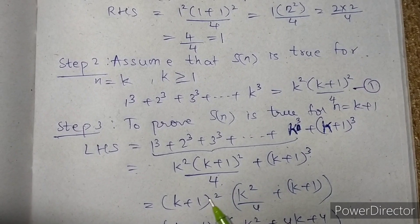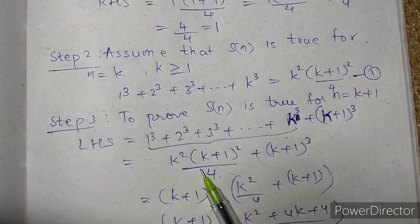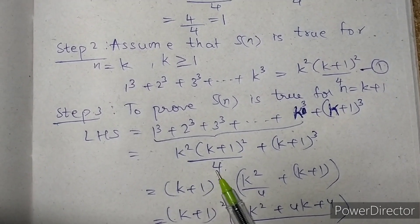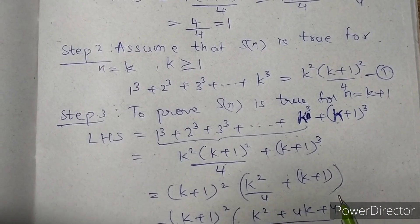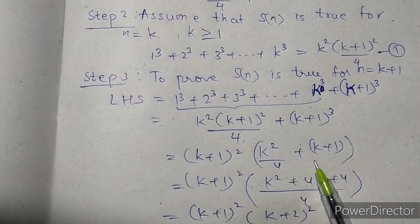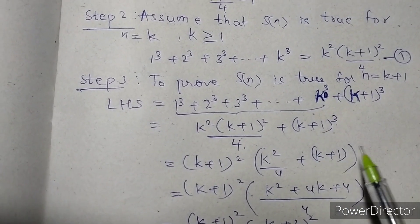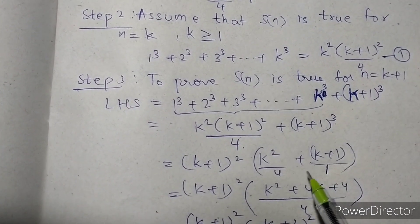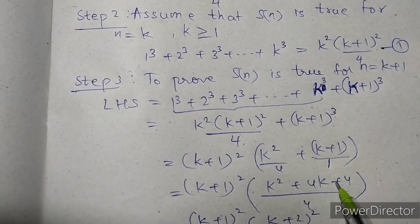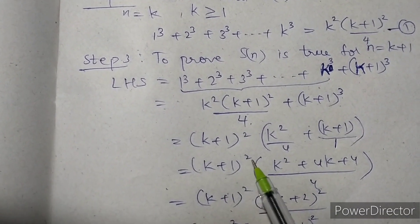Now we separate (k+1)² as a common factor from both terms. Taking (k+1)² out as common, what remains is k²/4 + (k+1). Taking the LCM of 4, we multiply (k+1) by 4, giving us k² + 4(k+1) all divided by 4. So we have (k+1)² × [k² + 4(k+1)] divided by 4, which expands to k² + 4k + 4 divided by 4.